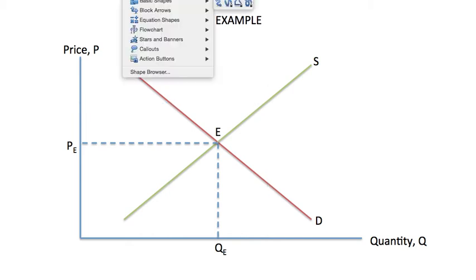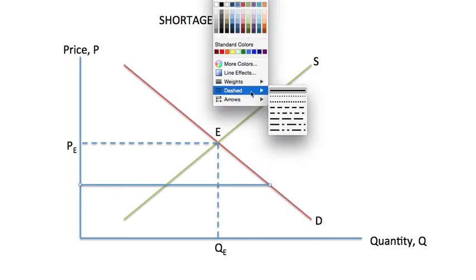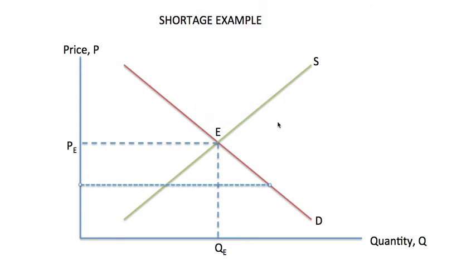So let's plot our current price here, and I will just dash it as well. There we go. And what we notice is that in a case of shortage, the quantity demanded exceeds the quantity supplied.